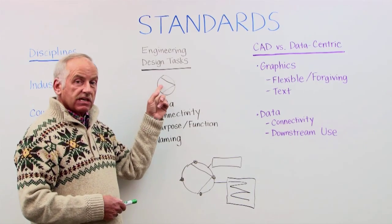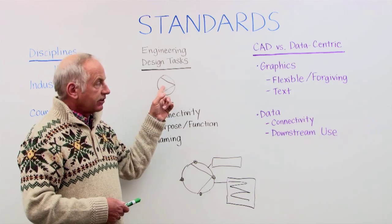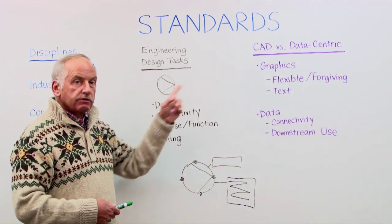So, for instance, come back on the pump, this symbol, when it is just a picture, it's fine on the P&ID, for instance, but what happens if we want to use it downstream?